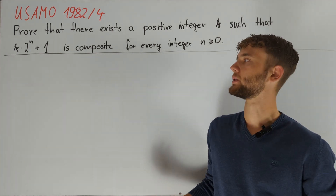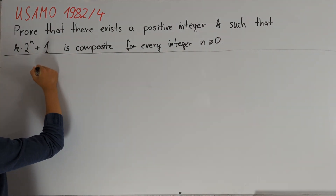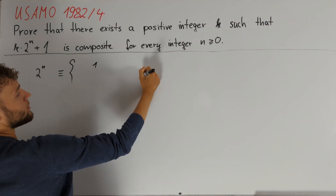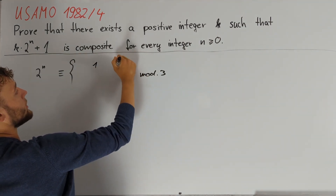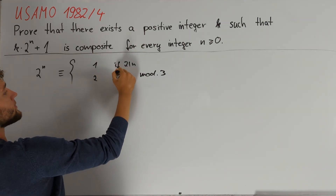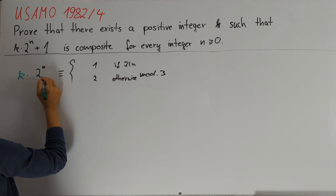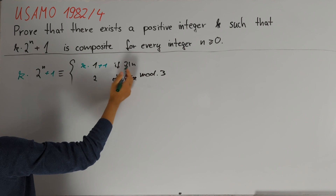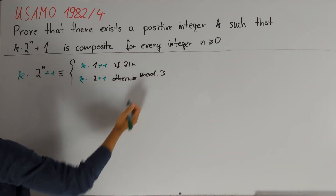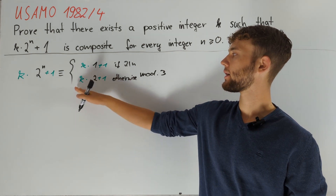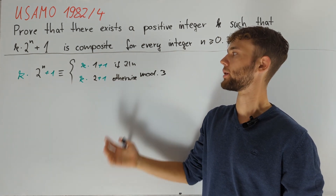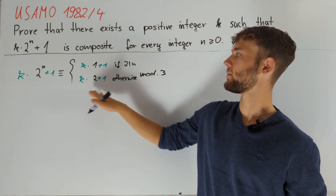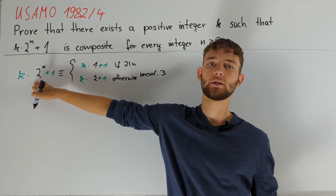On the other hand, for p equals 3 we get more interesting behavior. Namely, 2 to the power of n will be congruent to 1 modulo 3 if 2 divides n, and 2 otherwise. So we get k times 2 to the power of n plus 1. If k is divisible by 3 then none of these numbers will ever be 0 modulo 3. Otherwise, if k is 1 or 2 mod 3, then every second such term is divisible by 3 and therefore composite, if large enough.